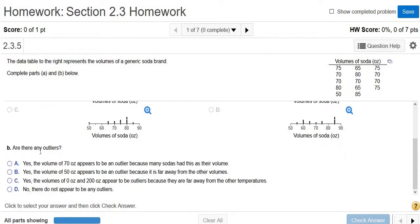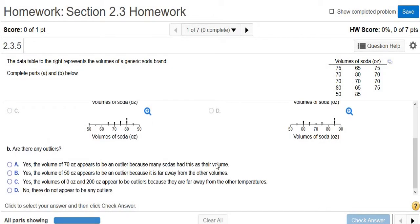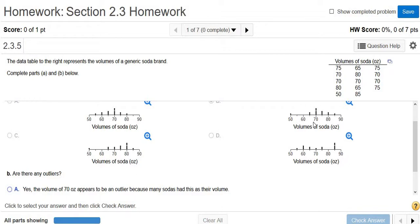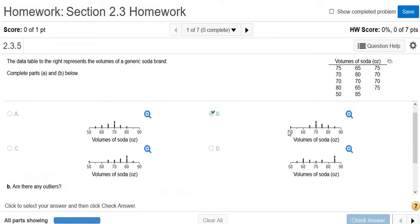Yes. All right. Are there any outliers? So outliers are numbers that are far from the majority of the other numbers. It looks like 50 is really far from the rest of the numbers from the dot plot. So you can use dot plots to help you detect outliers.